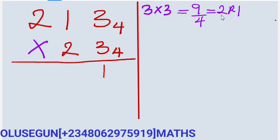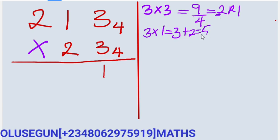You are going to add the 2 to the multiplication of 3 by 1. The next multiplication is 3 times 1, which is equal to 3. You add the carry 2 to it, giving us 5. And 5 is greater than 4, so you also divide. It goes in 1, remainder 1. You are going to write the remainder here.